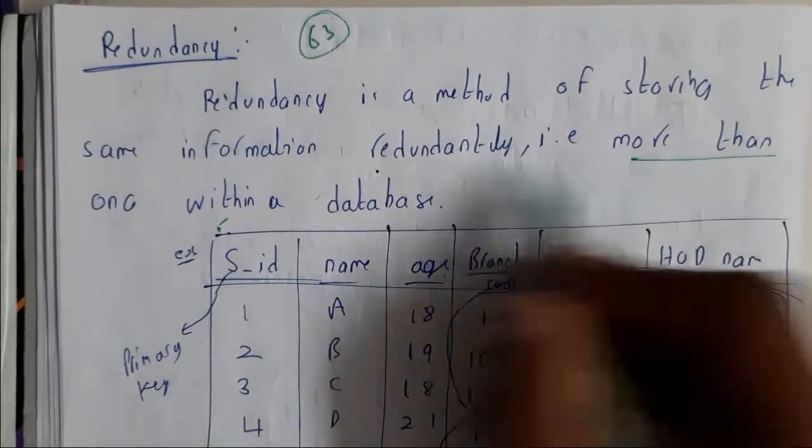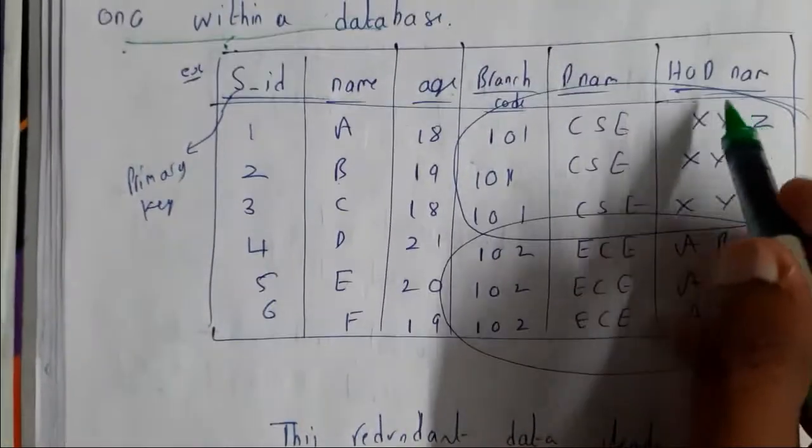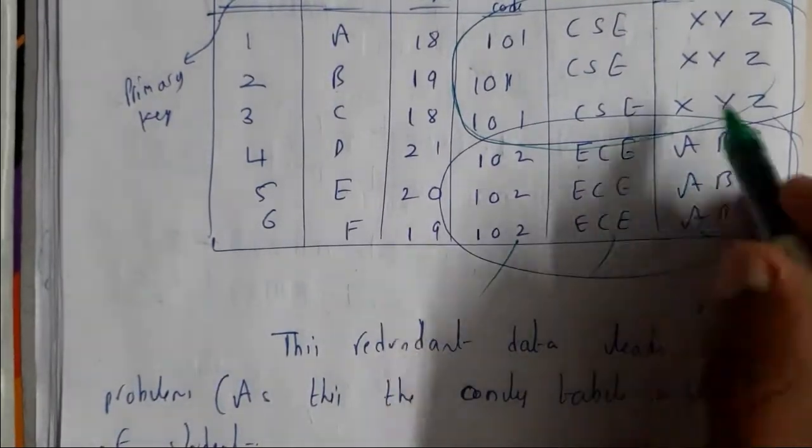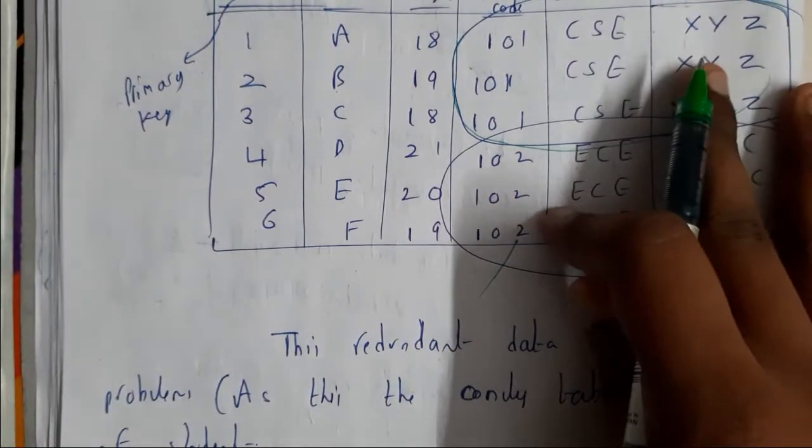Same information in more than one database or within one database. If you observe this table, we are having the branch name and HOD name repeated. This is an issue with redundancy.